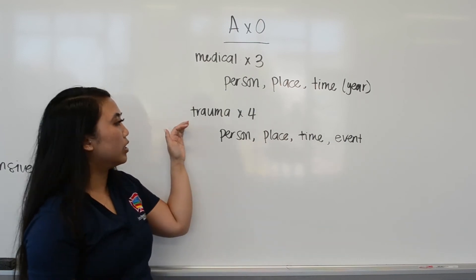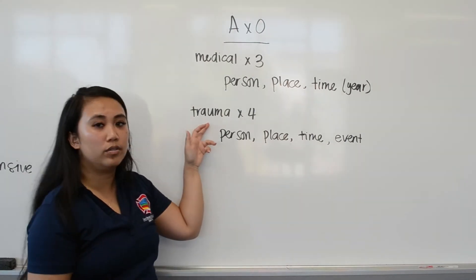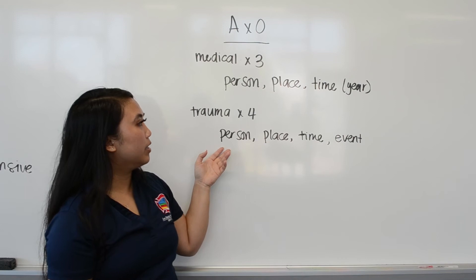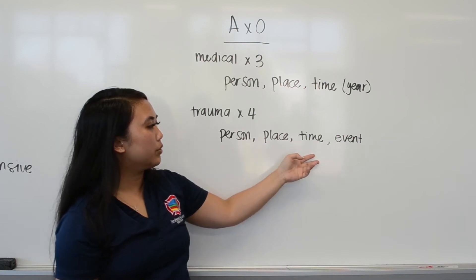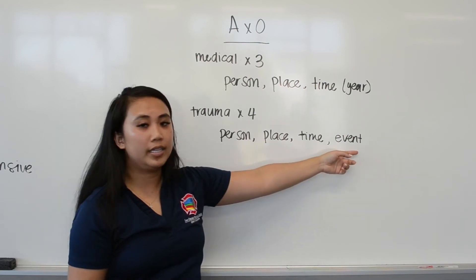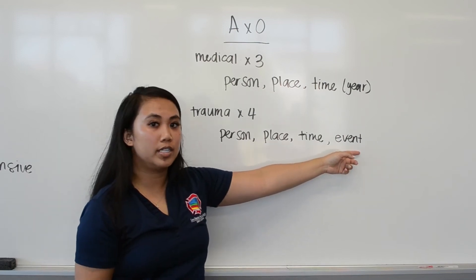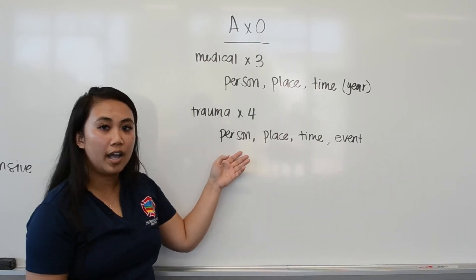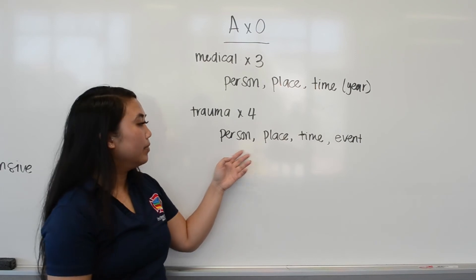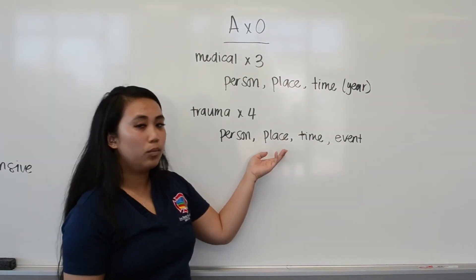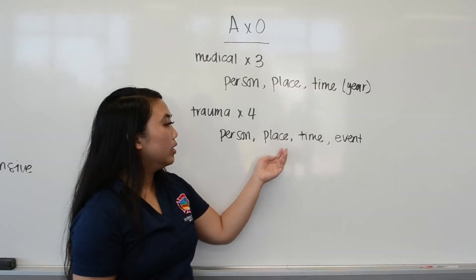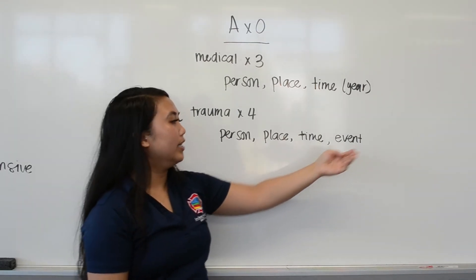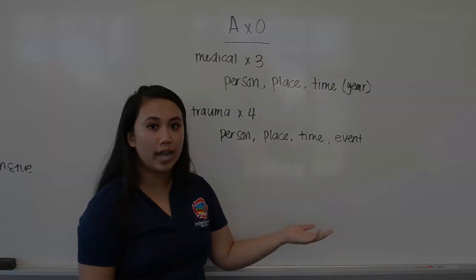For a trauma patient, it's A and O times four — the same first three questions, but they also have to be oriented to the event. So person — what's your name? Place — where are you? Time — what year is it? And event — what happened?